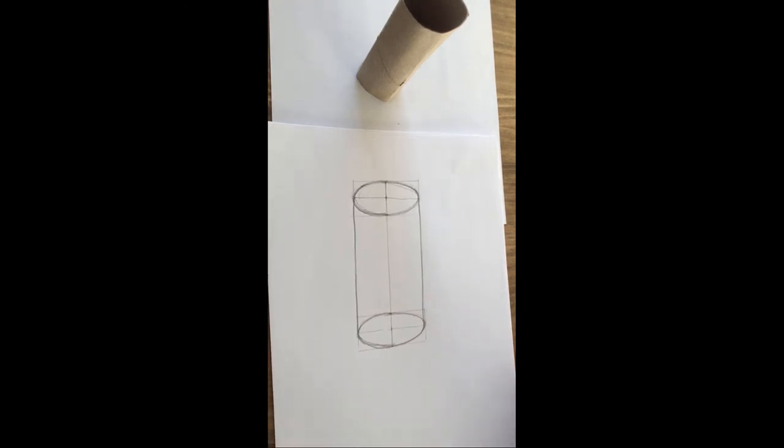And that is how to construct a cylinder with an ellipse at the top and an ellipse at the bottom.